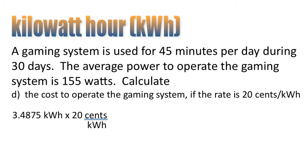And finally D. The cost to operate the gaming system if the rate is 20 cents per kilowatt hour. We take those two numbers and multiply them. Notice that by multiplying, the units cancel and we're left with 69-point-something cents, which rounds up to 70 cents.